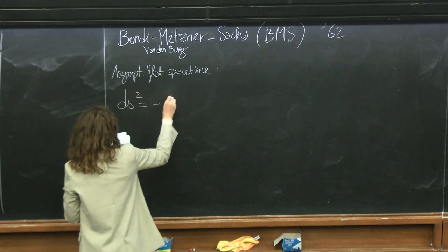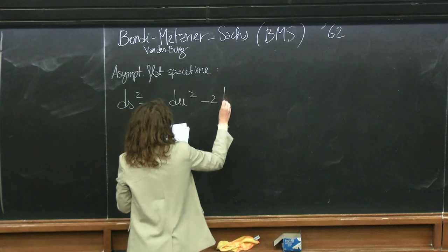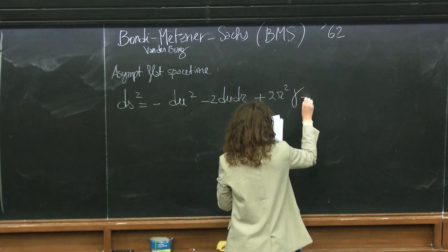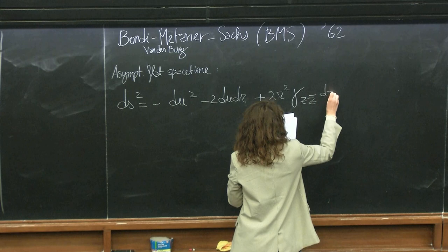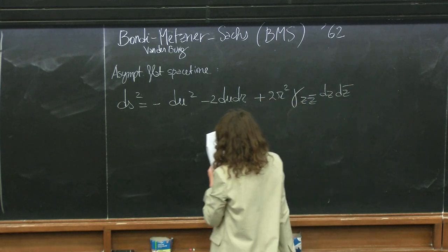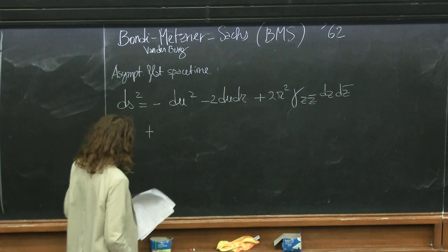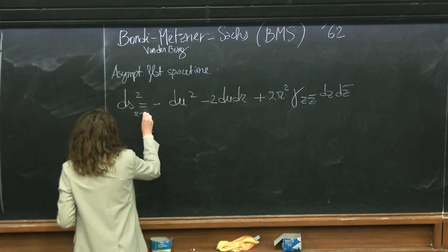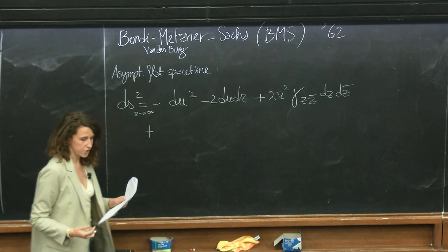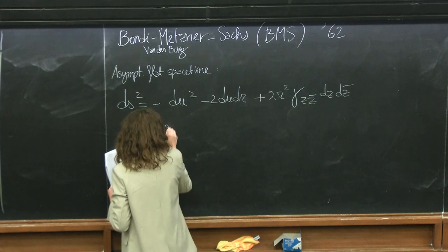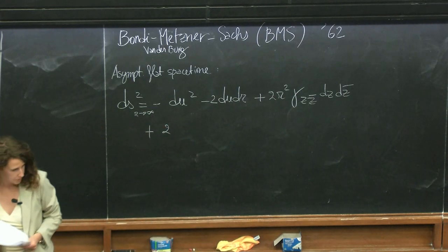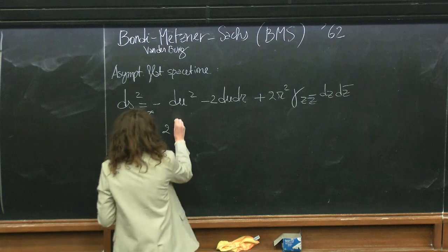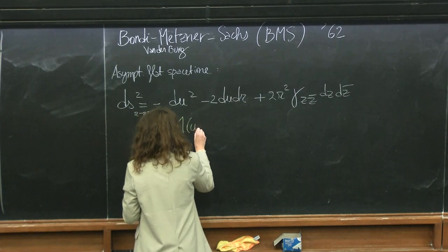In first approximation, an asymptotically flat spacetime is given by the Minkowski line element plus corrections that are suppressed as R becomes very large. This is a large-R expansion, and there is a precise prescription for this.